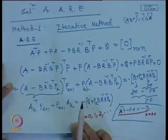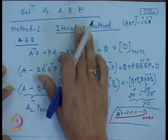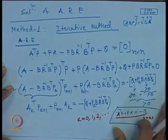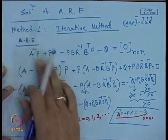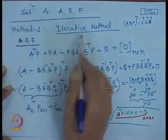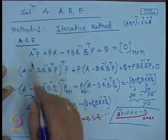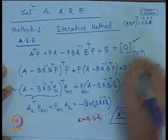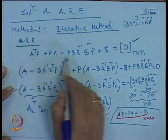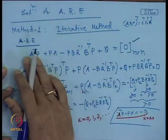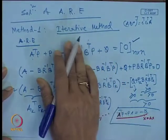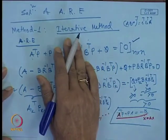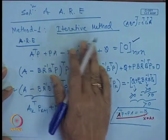Last class, we discussed the methods for solution. The first method is the iterative method. We have a given algebraic Riccati equation, which arises in the case of the infinite time regulator problem.